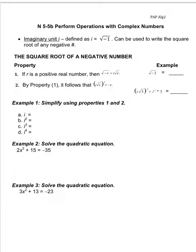Today we're going to be looking at 5.5B, which is performing operations with complex numbers.